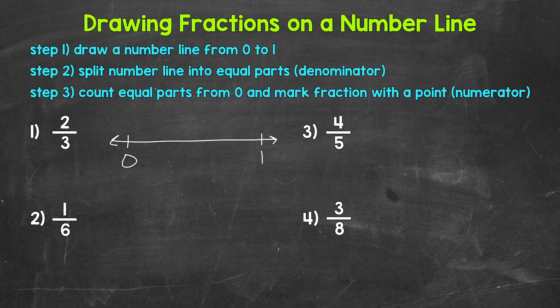The next thing we need to do is divide the number line — the distance between zero and one — into equal parts. Our denominator tells us how many total equal parts we need. For number one, our denominator is three, so we need three equal parts: one, two, three. Keep in mind, we just need two tick marks to make three parts. Don't make three tick marks because that will give us four parts.